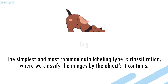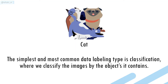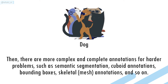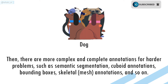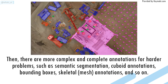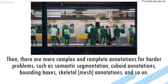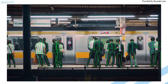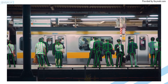The simplest and most common data labeling type is classification, where we classify the images by the objects it contains. Then there are more complex and complete annotations for harder problems, such as semantic segmentation, bounding boxes, skeletal annotations, and so on. Now I would like to take a minute to talk more about these types of annotations and the sponsor of this video, Keymaker.